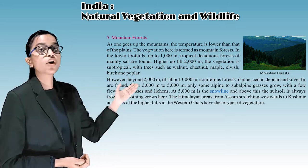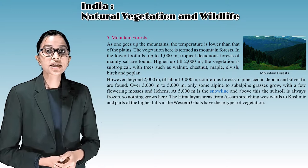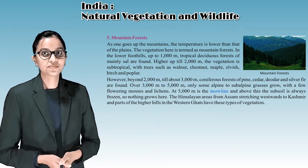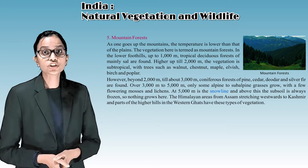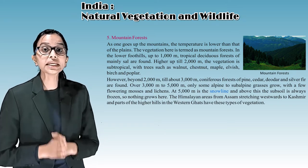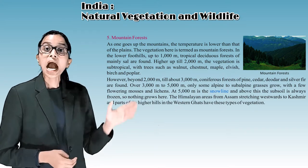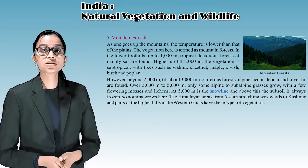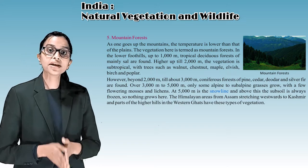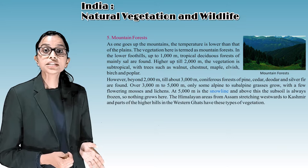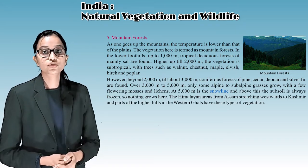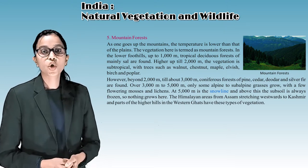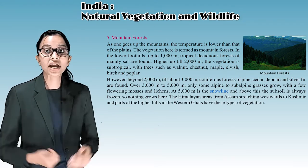The fifth is mountain forest. As one goes up the mountains, the temperature is lower than in the plains. In the lower foothills up to 1,000 meters, tropical deciduous forests of mainly sal are found. Higher up till 2,000 meters, the vegetation is subtropical with trees such as walnut, chestnut, maple, silver birch, and poplar. Beyond 2,000 meters till about 3,000 meters, coniferous forests of pine, cedar, and silver fir are found.